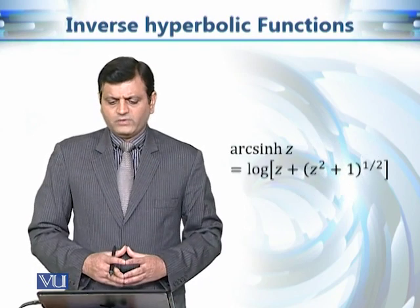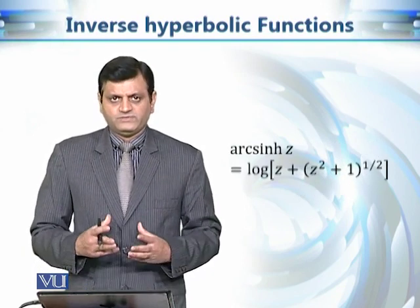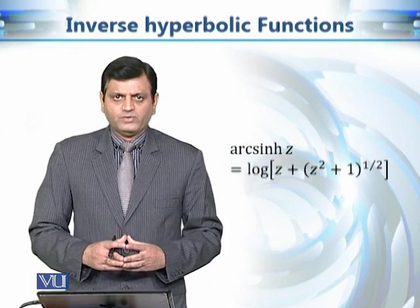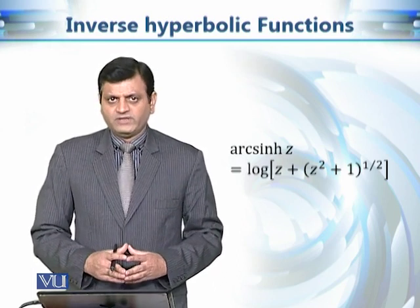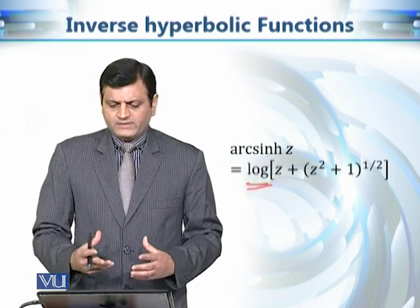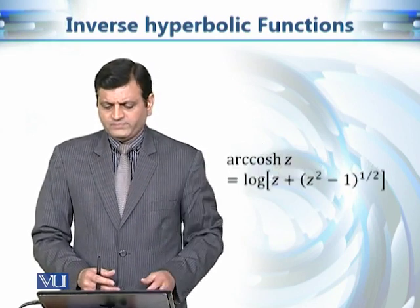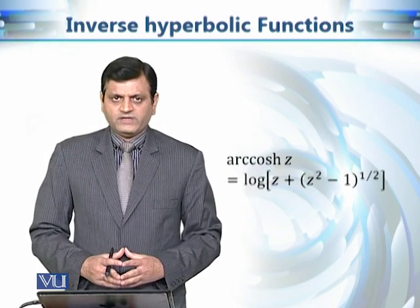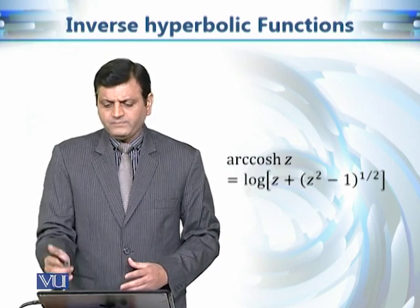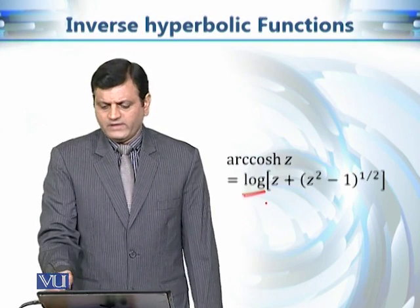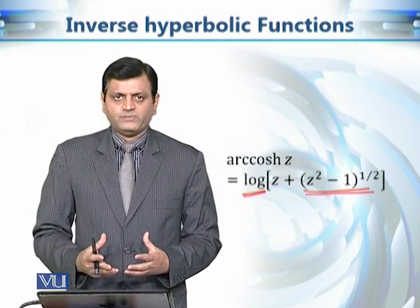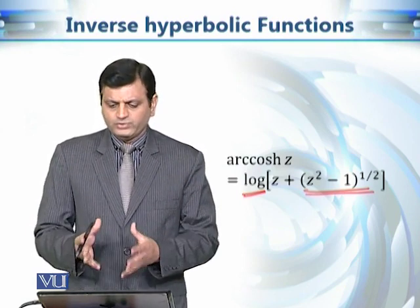Let us first focus on arc sine hyperbolic z. Its value is equal to log of z plus the square root of z squared plus 1. As you can see, it is a multivalued function since the logarithm function is multivalued. Arc cosine hyperbolic z is equal to log of z plus the square root of z squared minus 1.